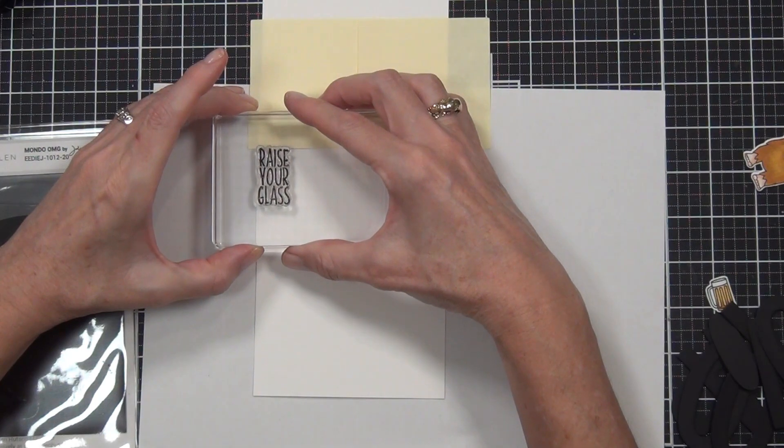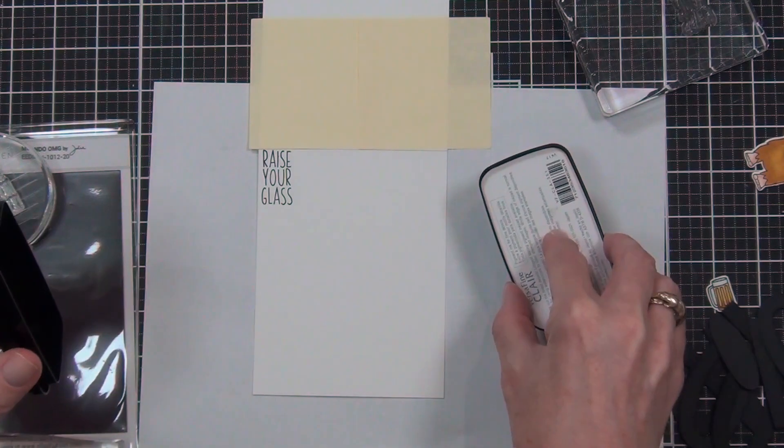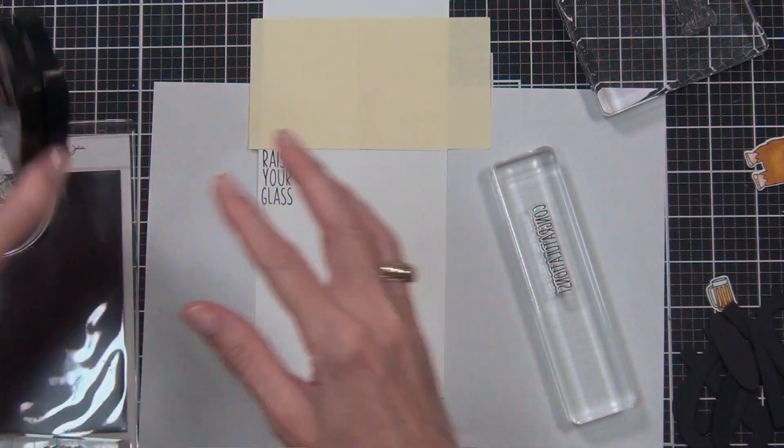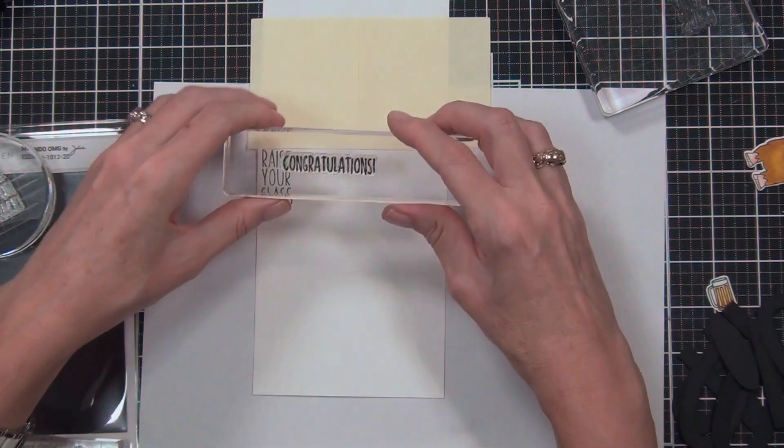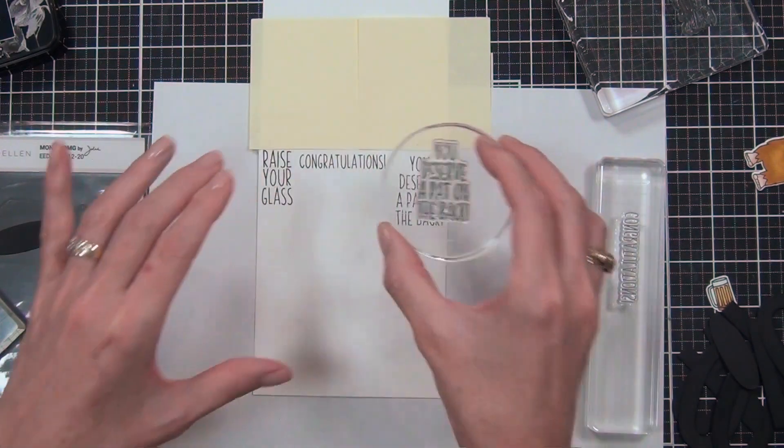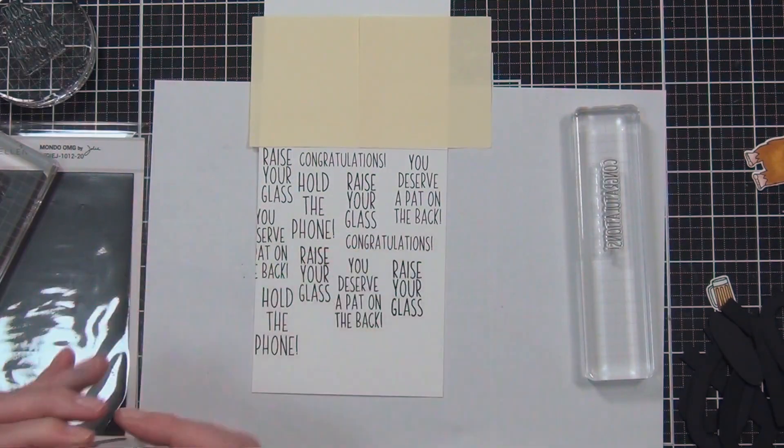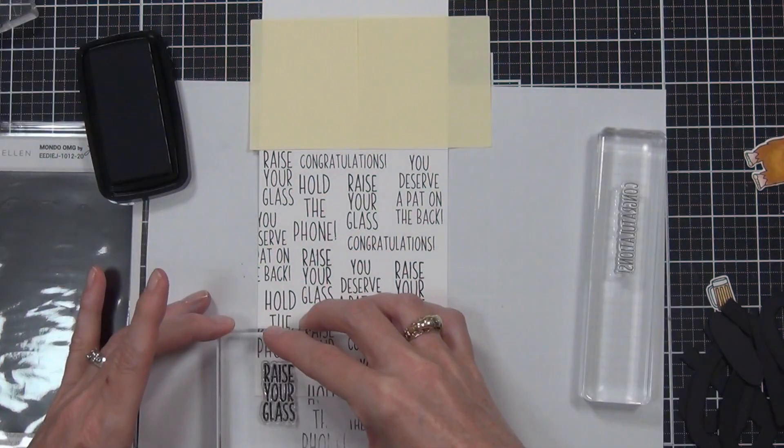All right, so I'm going to stamp out the background now. I have the sentiment set which is called Hang On, and I just chose a few of the sentiments that I thought would work really well for a birthday. I've stamped them randomly all over the front panel of my card. I just used some Post-it notes to mask off the back of the card.